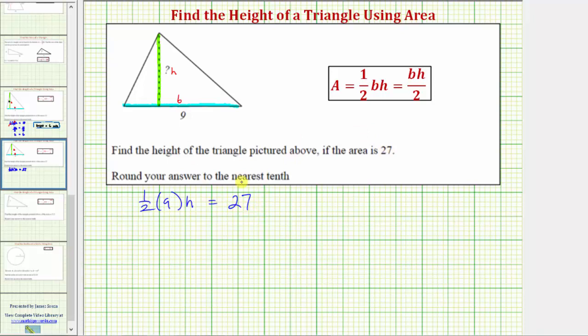And now to solve for H, we need to isolate H on one side of the equation, but let's first simplify the left side by determining the product of one-half and nine.